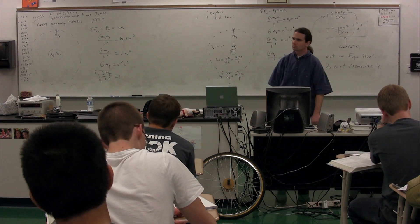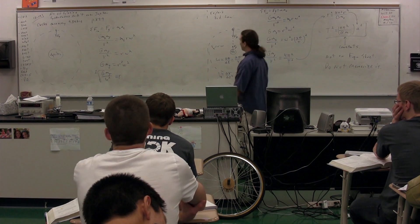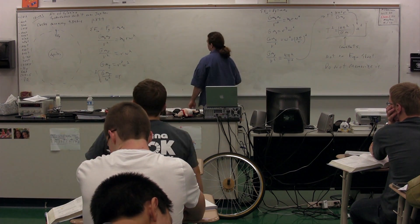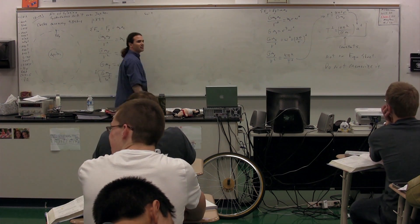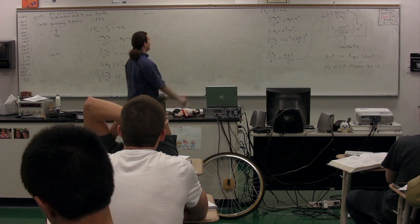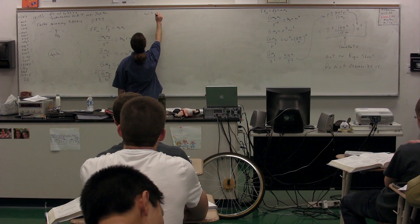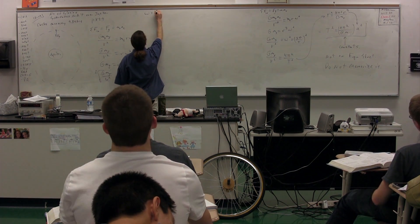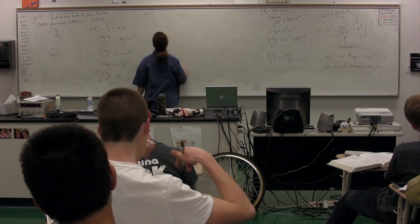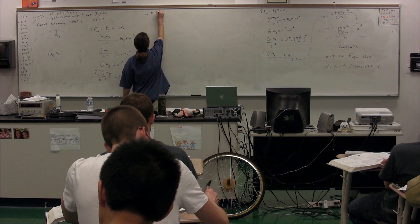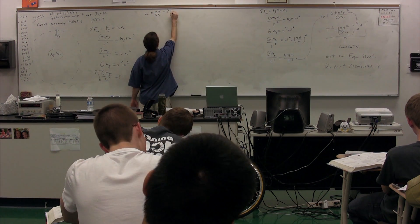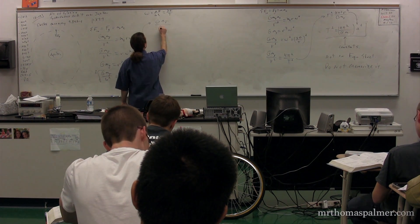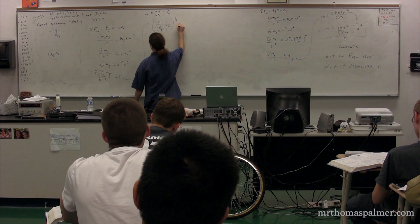The equation for angular velocity is change in theta over change in t, so omega equals two pi radians divided by the period. Substituting in for omega, we get r equals the cube root of big G times the mass of Jupiter divided by (two pi over T) squared, which simplifies to the cube root of T squared times big G times mass of Jupiter divided by four pi squared.